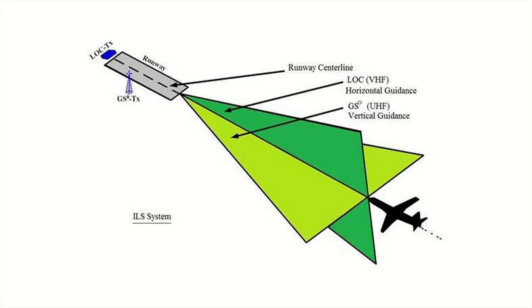ILS has two parts. The first part is the localizer. The localizer provides horizontal guidance — that means left or right of the runway centerline.